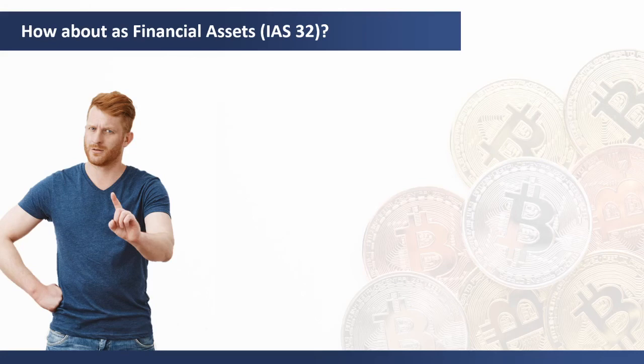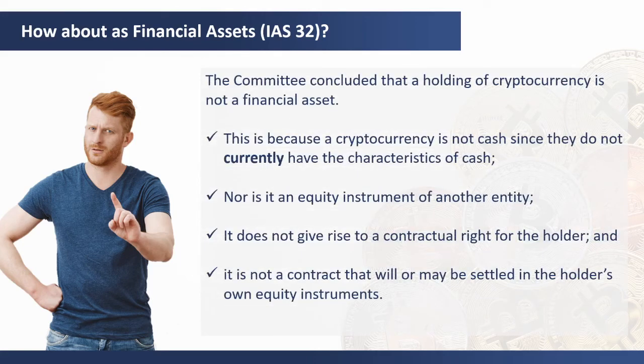Regarding cryptocurrencies as financial assets, the committee concluded that a holding of cryptocurrency is not a financial asset. This is because a cryptocurrency is not cash, as it does not currently have the characteristics of cash, nor is it an equity instrument of another entity. A cryptocurrency does not give rise to a contractual right for the holder, and it is not a contract that will or may be settled in the holder's own equity instruments.